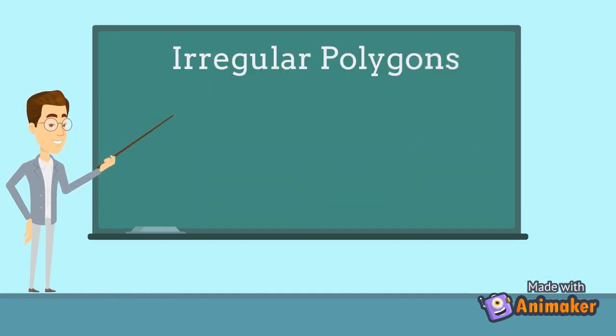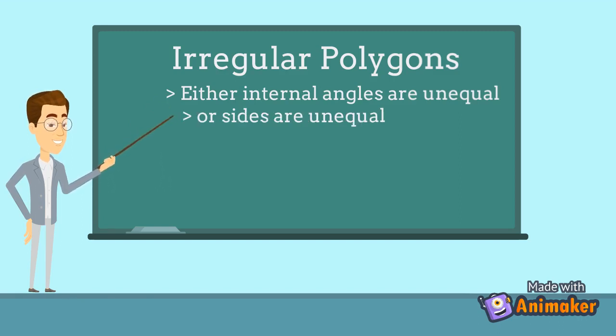Now let's talk about irregular polygons. A polygon is irregular when either its internal angles are unequal or its sides are unequal.